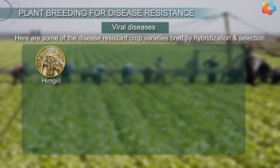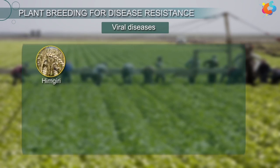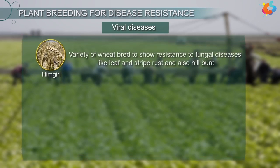Here are some of the disease-resistant crop varieties bred by hybridization and selection. Himgiri is a variety of wheat bred to show resistance to fungal diseases like leaf and stripe rust, and also hill bunt.